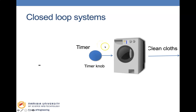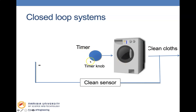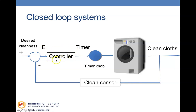To convert a washing machine into a closed loop system, we keep the timer but add a mechanism that measures whether the clothes are clean or not. A clean sensor compares the desired cleanliness with what we are getting and produces an error signal. This error signal triggers the controller, which increases or decreases the time until the clothes are clean. Once the error is very small or zero, the system stops. This is now a closed loop system.